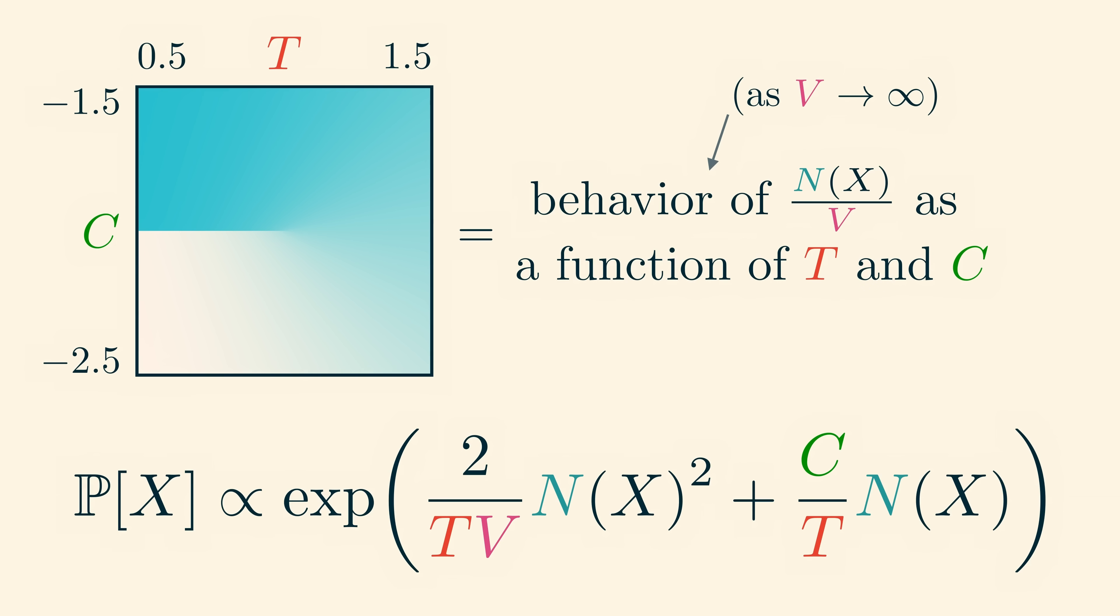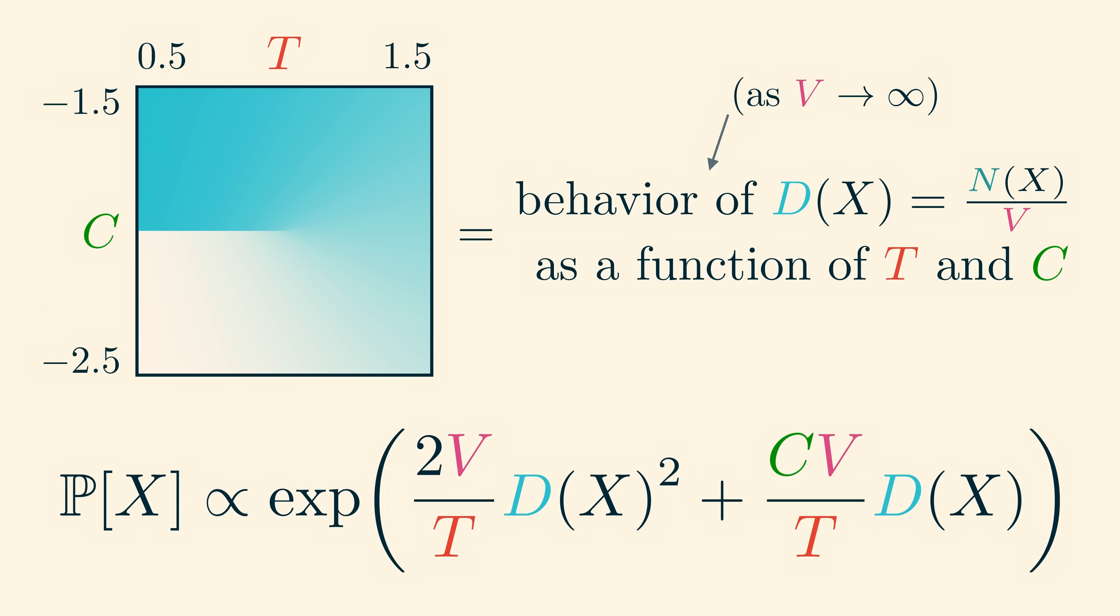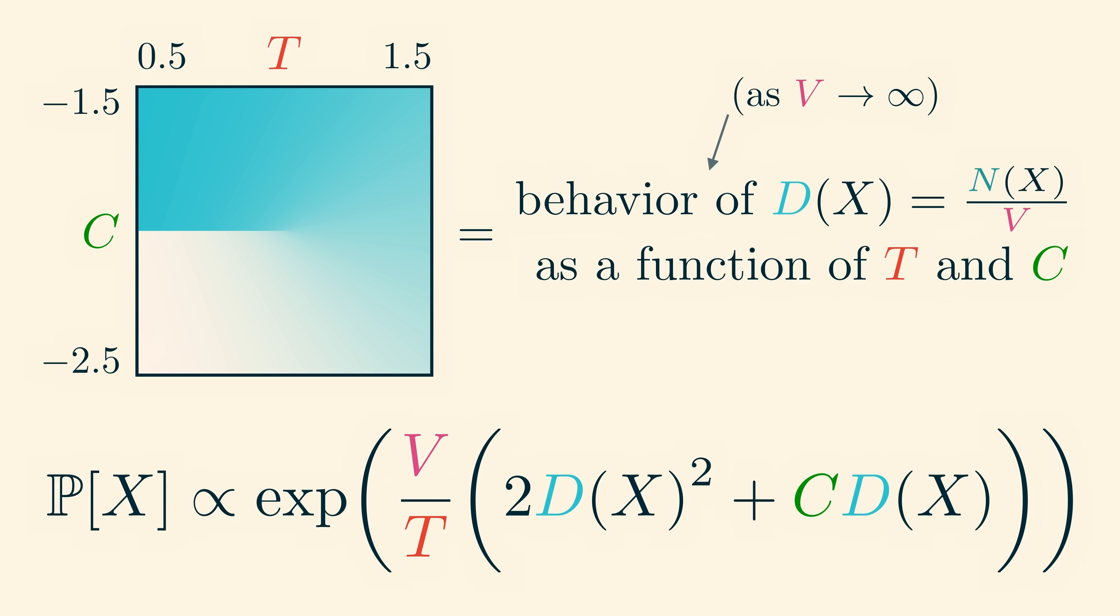To do that, let's call the density d of x. Then we can replace n of x by v times d of x and simplify the formula. We find that the probability of a particular microstate is proportional to the exponential of v over t times 2 d of x squared plus c d of x.